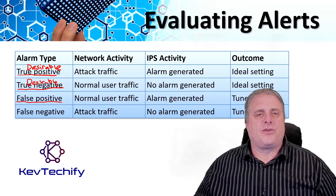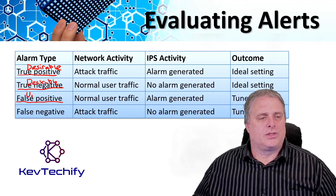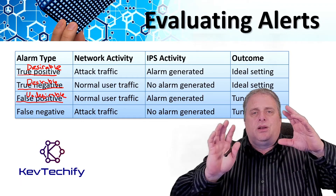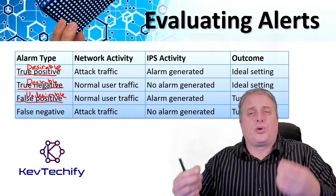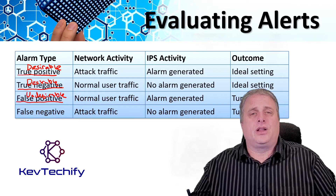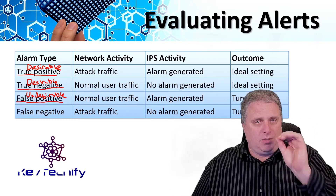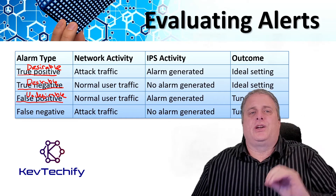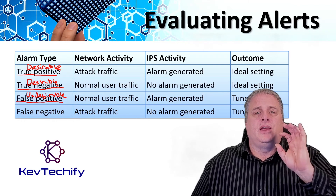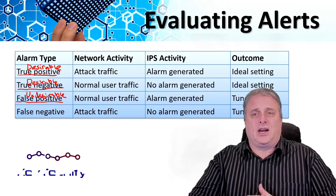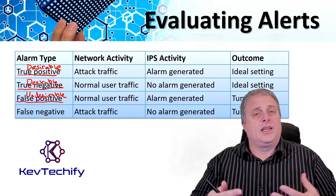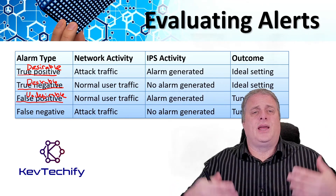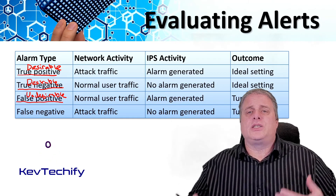The next classification is a false positive, which is undesirable. This is used when the intrusion prevention system generates an alarm after processing normal traffic that should not have triggered an alarm. The IPS must be tuned to change these alarm types to true negatives. The alert does not indicate an actual security incident. Benign activity that results in a false positive is sometimes referred to as a benign trigger, and false positives are costly because they must be investigated.